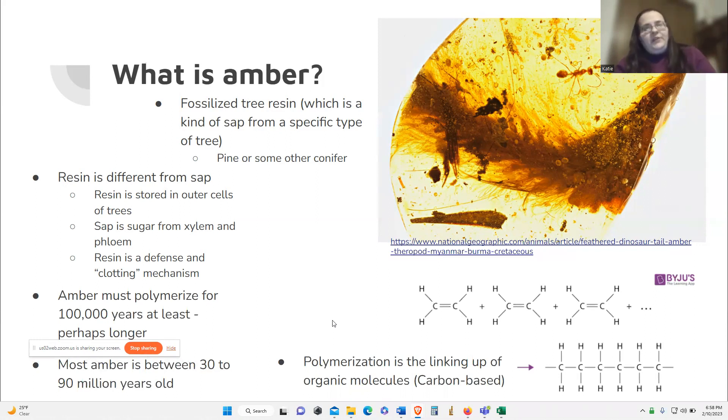So resin is different from sap. Resin is stored in outer cells of trees. It's a defense mechanism, but it's also used to kind of clot wounds in the tree. You know how we have things within our blood that will rush to the site of a wound and start to patch it up quickly? That's what resin acts like in a tree. And sap is more of sugar - it's a sugary water from the xylem and phloem cells. Resin is a defense and clotting mechanism. So what people have found that resin can do, in addition to clotting, is it also has healing properties as well, healing chemicals that can help the tree heal faster. And it has certain pheromones in it that will attract insects and other predators of the insects that are currently attacking the tree. So you have these herbivores, these insects that want to eat the tree, and the resin will actually attract other insects to come eat those insects that are attacking the tree. I thought that was so interesting. But most amber is between 30 to 90 million years old. And amber must polymerize for at least 100,000 years, although a lot of people say it has to polymerize somewhere between 2 to 10 million.